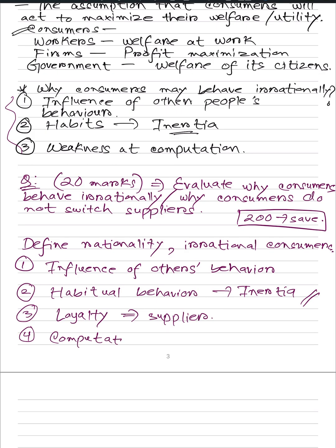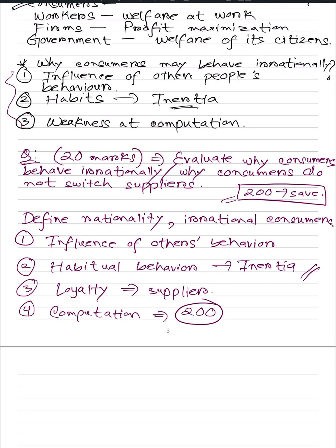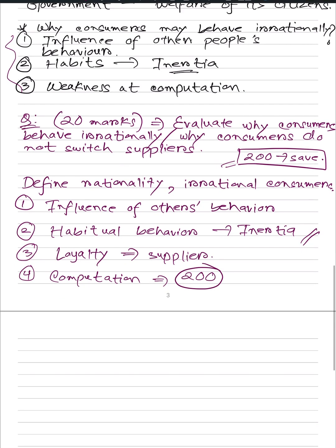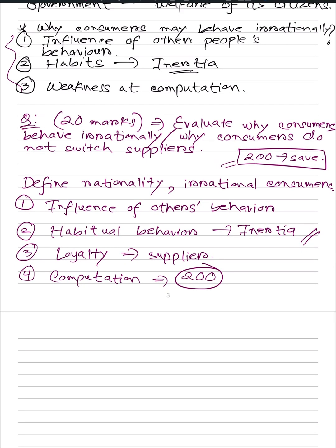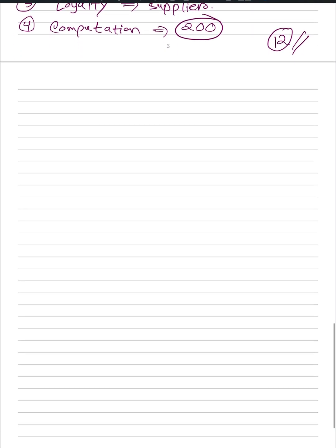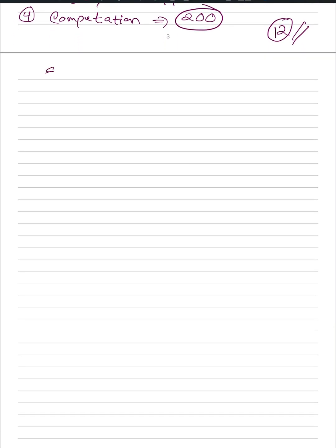For computation, relating it to the extract, we say that maybe I don't know I can save £200 by switching, or I am unable to compute that saving, and therefore I don't switch — which brings me to irrational behavior. All of these four points get you 12 marks out of 20. The remaining 8 marks come from evaluation.